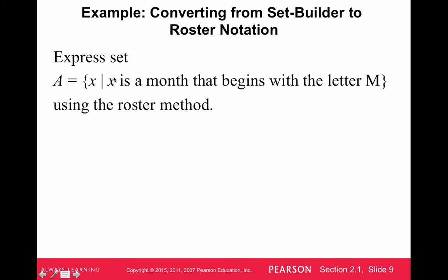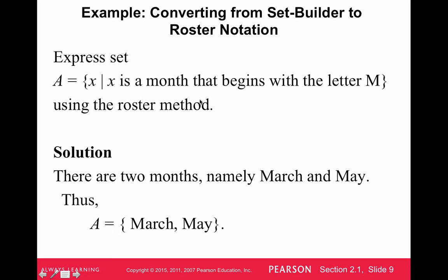It says express the set using the roster method. So we have this in set builder notation. It says A is the set of things such that those things are a month that begins with the letter M. So we need to figure out the months that begin with the letter M and we can list them out. That's what roster method means. So we have March and May. So we list those out.